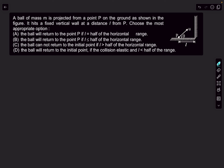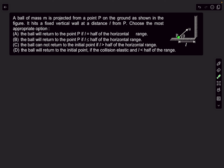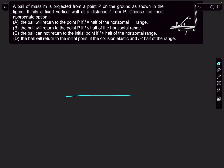Let's begin with the first question, which is from projectile motion. We have a ball of mass m projected from a point P on the ground. It hits a vertical wall at a distance l from the point of projection. The options ask under what condition the ball, after hitting the wall, will come back to the initial point P. No information about the collision is given, so let's draw a diagram.